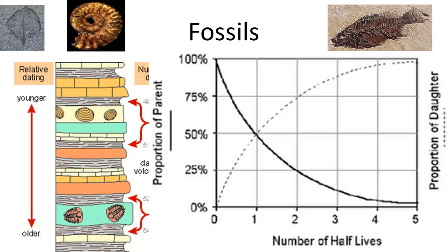Have you ever seen a trilobite? More than 500 million years ago, these arthropods roamed the Earth, leaving record of the diversity in the form of fossils. So you wouldn't have actually seen one. You would have seen an imprint of their remains, or perhaps a hardened version of one.